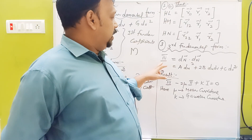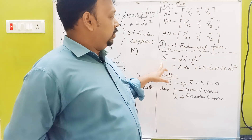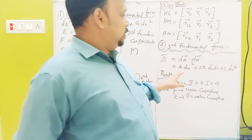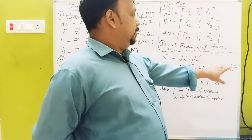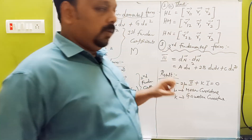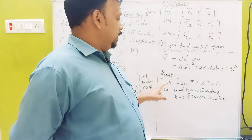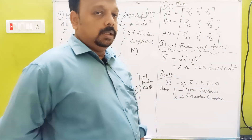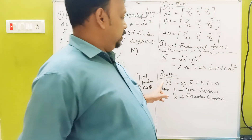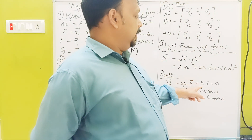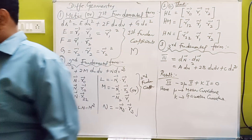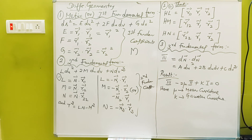The third fundamental theorem is dn vector dot dn vector — dn · dn. So that's the formula: a·du² plus 2ab·du·dv plus 3·dv². The third fundamental theorem is linked to the equation: third fundamental theorem minus 2μ times second fundamental theorem plus κ times I equals 0. So here the mean curvature is κ. So the third fundamental theorem is important.